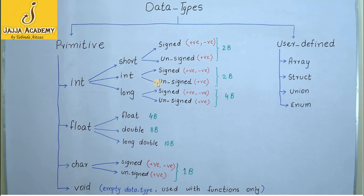Then comes signed integer and unsigned integer. The difference is the same as signed short and unsigned short: signed integer stores both positive and negative numeric values, but unsigned integer can store only positive values. Similarly, long integer is divided into signed long and unsigned long. Signed long stores both positive and negative values, while unsigned long stores positive values only.